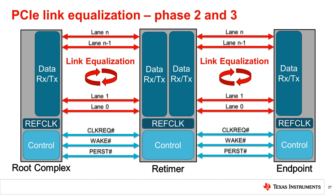After phase 1 has achieved a link with a bit error rate of less than 10 to the negative 4, the link is ready for fine tuning. The negotiation continues with phase 2 further optimizing the preset values for the upstream port, while phase 3 performs the same negotiation for the downstream port. After completing phase 3 of the link EQ process, link EQ is completed and the Gen 3 PCIe link should have a bit error rate less than 10 to the negative 12.